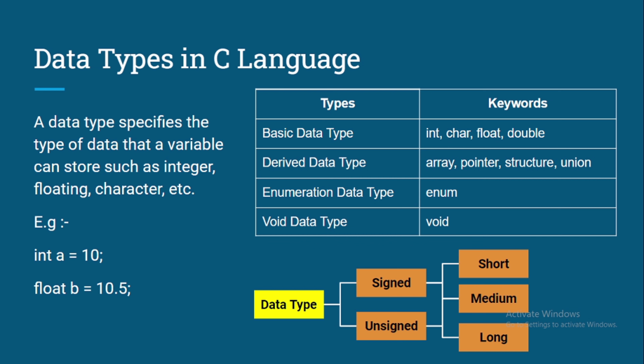We have categories: signed and unsigned, each divided into short, medium, and long. This is because if we have a small value, we should not waste memory by assigning a large container. If we have a short value we use short int, for medium values we use int, and for long numbers we use long int. This is how memory management works with these categories.